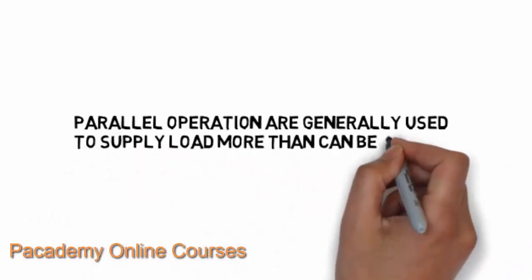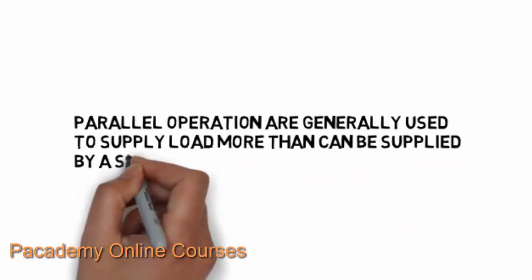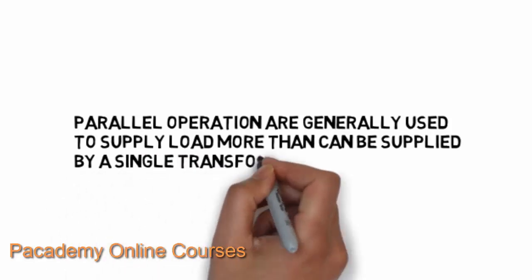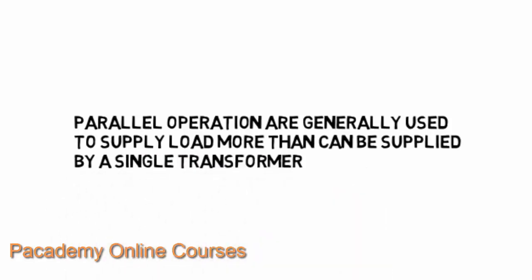The parallel operation of transformers is generally used to supply a load that is more than what can be supplied by a single transformer.